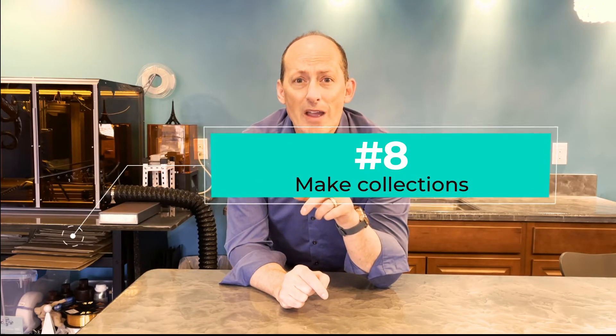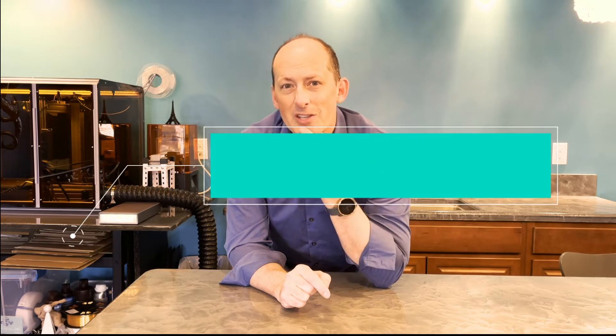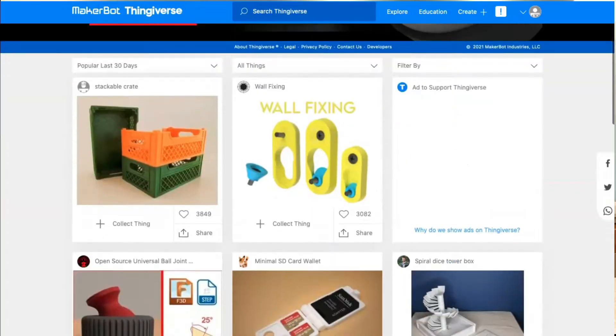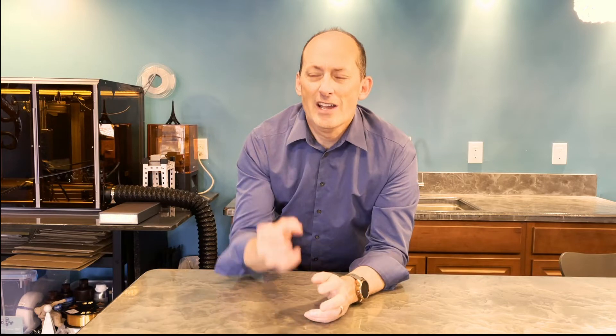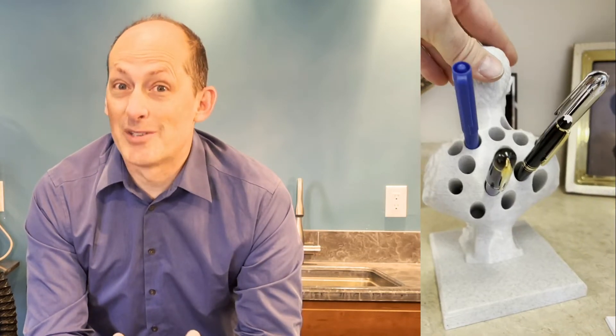Before your printer even arrives, go find some things that you're really interested in and start collecting them. Thingiverse and a lot of the other repositories of 3D models will have files that you can collect in various locations and you can label your collections different names so you can collect your different ideas just like Pinterest. For example, I found this before I even got my 3D printer and I thought I have to print that.